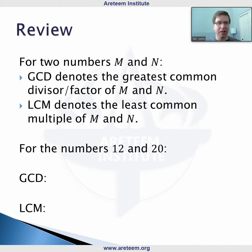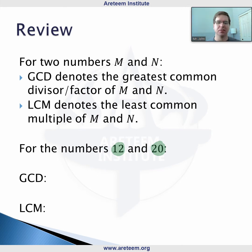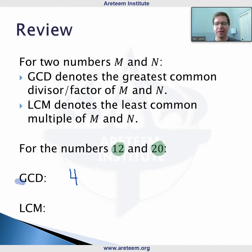Doing a quick example here: if we take the two numbers 12 and 20 and we are looking for their GCD and their LCM, the GCD is the greatest common factor of those two numbers. These numbers are small, so you can just look at the factors. 20 has factors of 1, 2, 4, 5, 10, and 20. The largest one in common with 12 is 4, so the GCD is equal to 4 in this case.